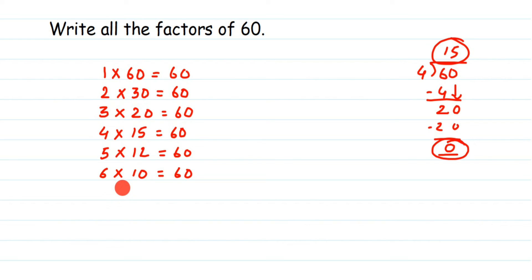So all the factors—what are the factors here? All these numbers we got: 1, 2, 3, 4, 5, 6, and this side: 10, 12, 15, 20, 30, and 60. These will be the factors of 60. It's very simple.